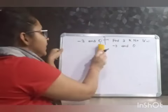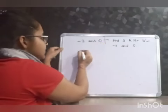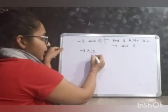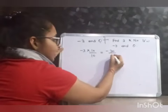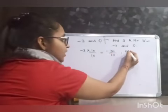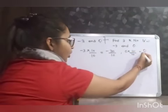So, how will you proceed? You will proceed as minus 3 can be written as minus 3 multiply and divide by 10. It means it gives you minus 30 by 10, and 0 multiplied by 10 by 10, it means 0 upon 10.